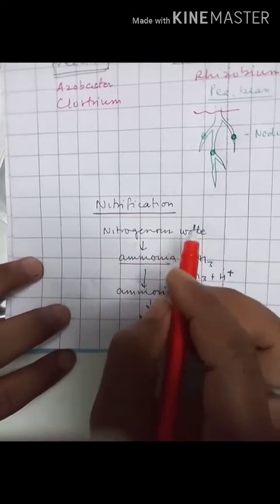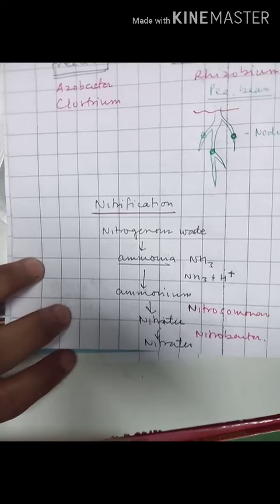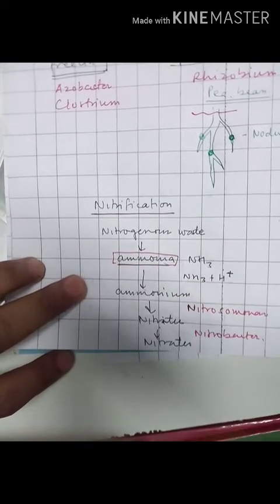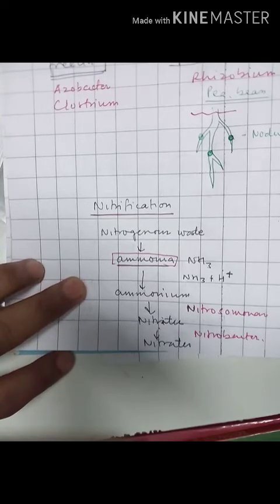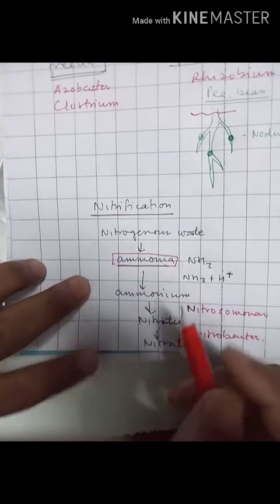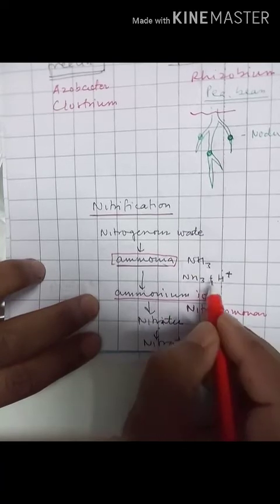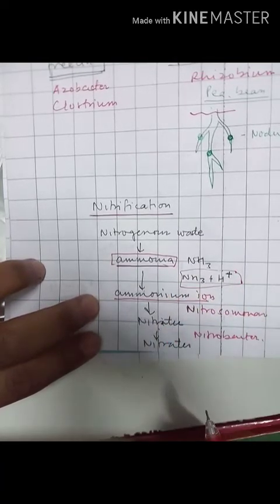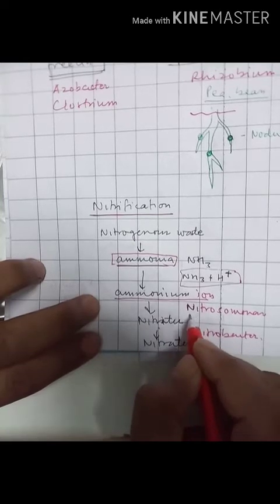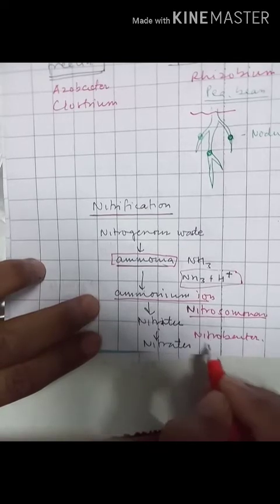The steps of nitrification: First, the dead remains of plants and animals are decomposed into nitrogenous compounds, that is ammonia — this is brought about by decomposing bacteria. Ammonia is then converted into ammonium ions when it combines with a proton. Ammonium ions are initially converted into nitrites by the bacterium Nitrosomonas, and nitrites are further converted into nitrates by Nitrobacter.